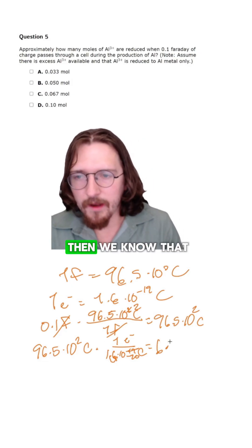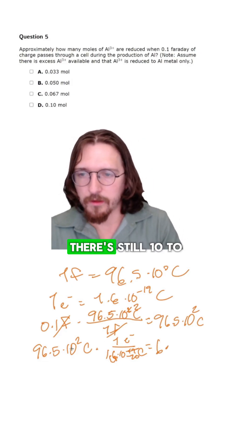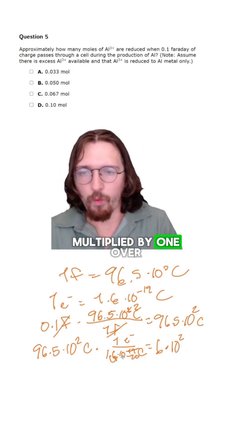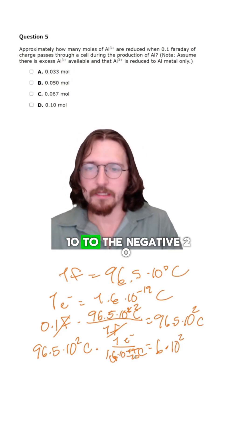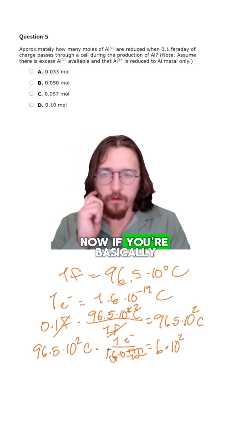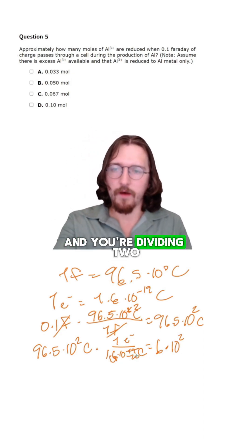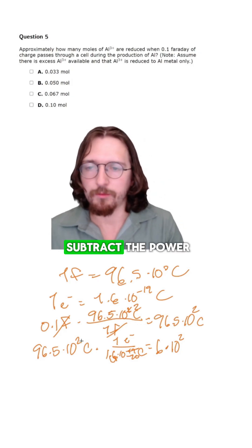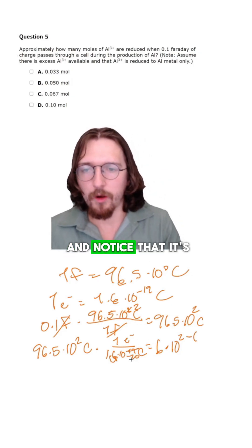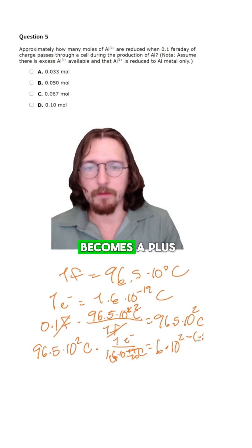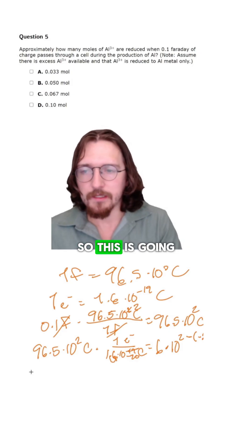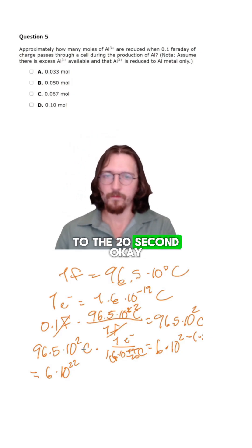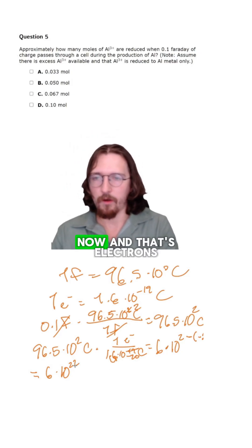That's the coefficients done. We still have 10 to the 2nd multiplied by 1 over 10 to the negative 20. When dividing terms with the same base raised to a power, you subtract the exponents: 2 minus negative 20 becomes a plus, so this is going to be 6 times 10 to the 22nd electrons.